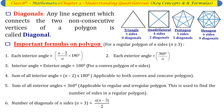Important formulas for a regular polygon of n sides: (1) Each interior angle = (n−2)/n × 180°. (2) Each exterior angle = 360°/n. (3) Interior angle + exterior angle = 180°. (4) Sum of all interior angles = (n−2) × 180°. (5) Sum of all exterior angles = 360°. (6) Number of diagonals = n(n−3)/2.